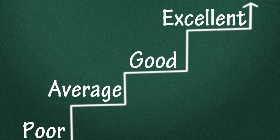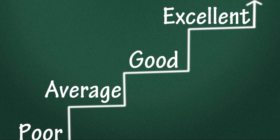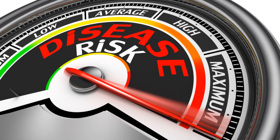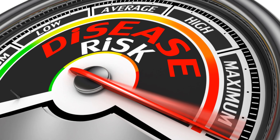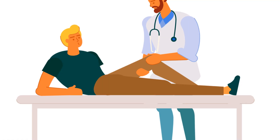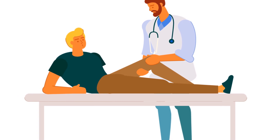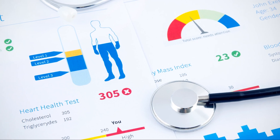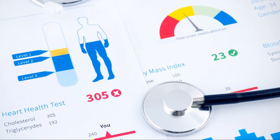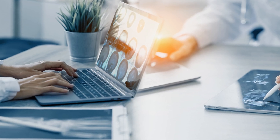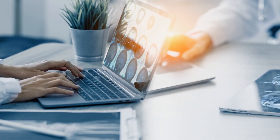They provide a more detailed look at the severity of illness and risk of mortality by breaking it down into four subclasses for each DRG. APR-DRGs expand upon DRGs and APDRGs by also assigning to each case a severity of illness (SOI) subclass and risk of mortality (ROM) subclass. Severity of illness means the extent of physiologic decomposition or organ system loss of function. Risk of mortality is the likelihood of dying.